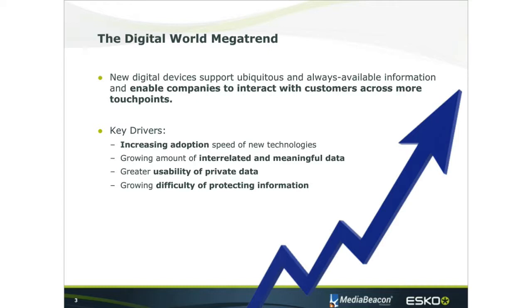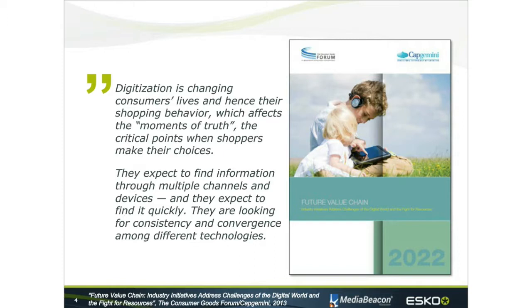I came across a report from the Consumer Goods Forum and Capgemini talking about the future value chain and the digital world. They discuss how the digital world is changing consumers' lives and the way they shop — it affects those moments of truth, the first or zero moment of truth. Because people are doing a lot of shopping and research digitally, it changes those critical points when shoppers are making choices. They expect to find information through multiple channels and multiple devices, very quickly. But they also expect that experience to be consistent — consistency regardless of where they're searching or what device they're using.